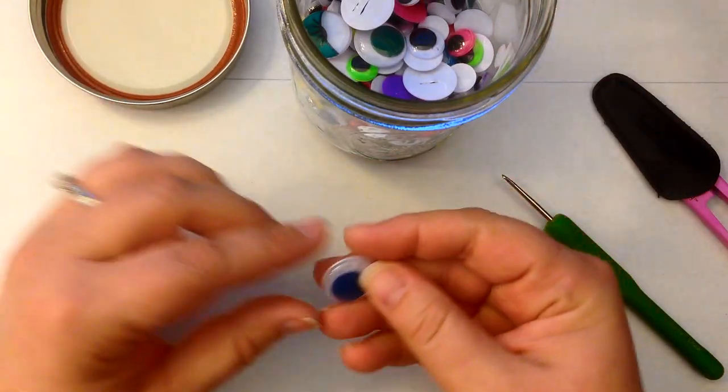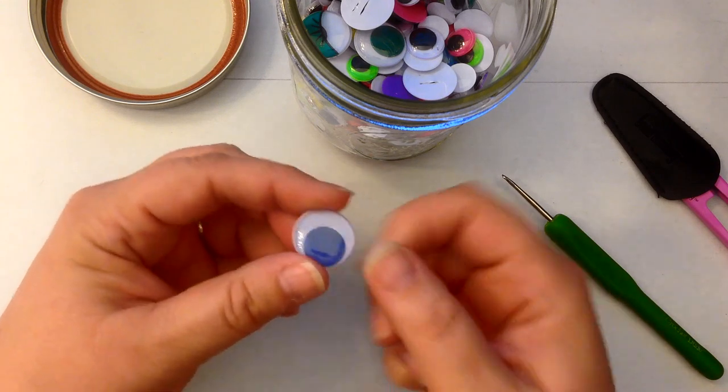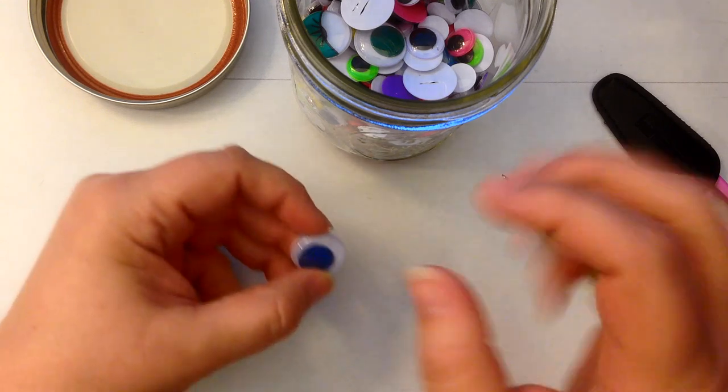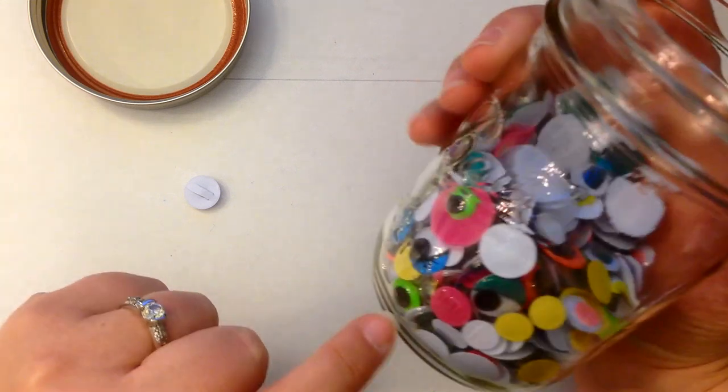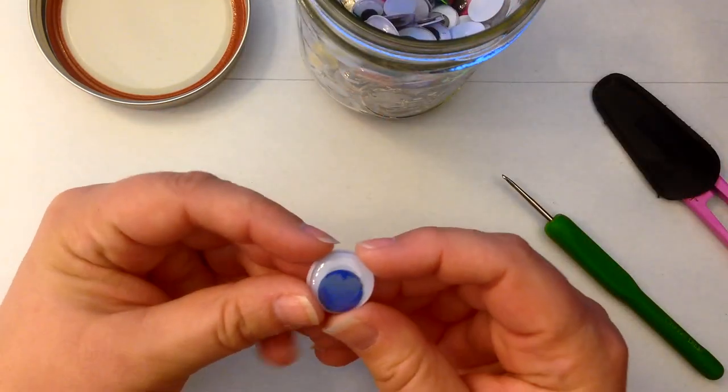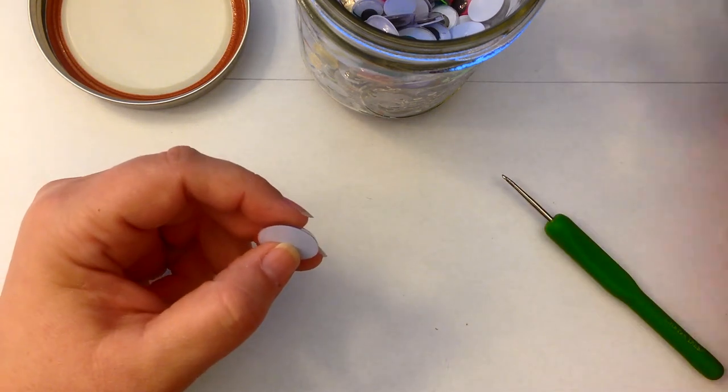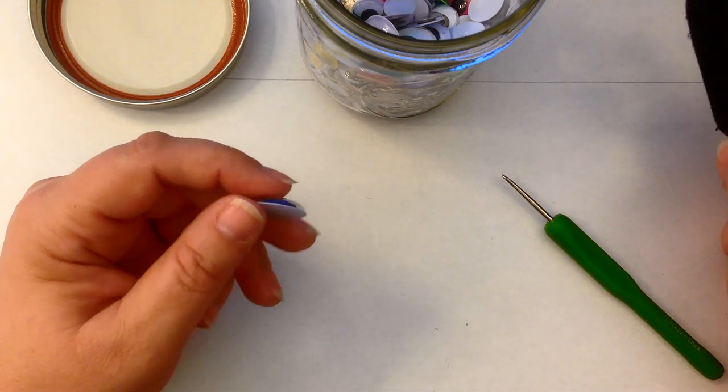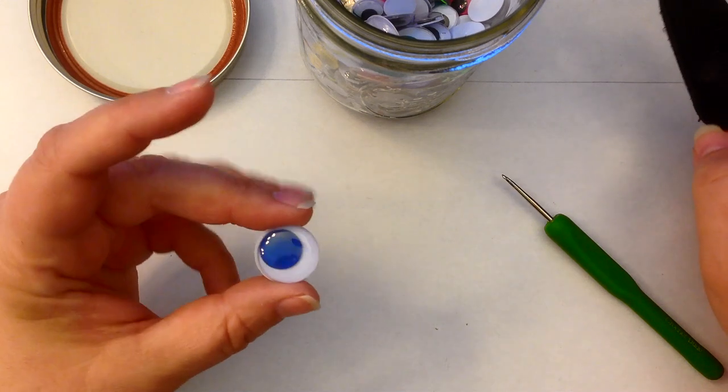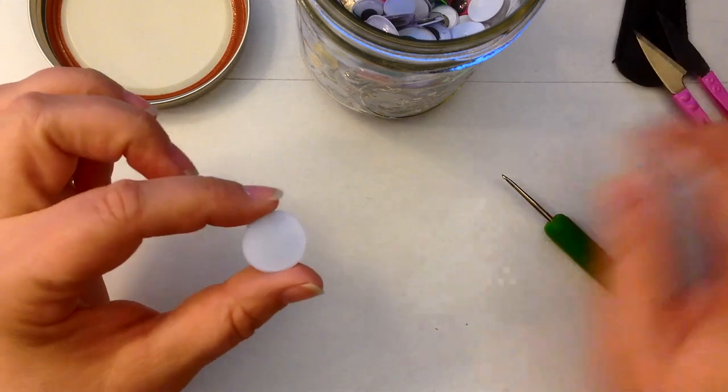I thought it would be a good idea to show you how you can use a standard googly eye of whatever size you choose - some of them have eyelashes, some don't - and make it so that it will fit a band through it. I did this for my tutorial on the Power Puff Girls, but some of you might not want to watch that particular video to find out how to do it.